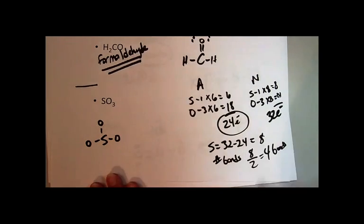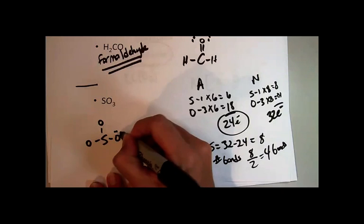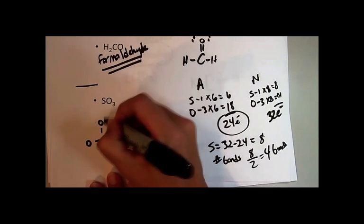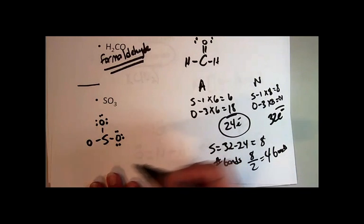And so what do I have here? I've used six. I have a total of twenty-four. That means I have eighteen left to place. And you just start placing them. You know, this is like a puzzle, remember? It's just sometimes you have to do it and redo it and do it until you get it right.